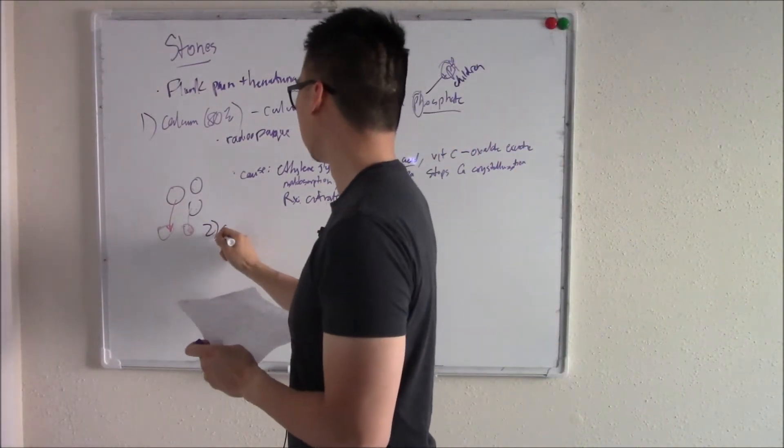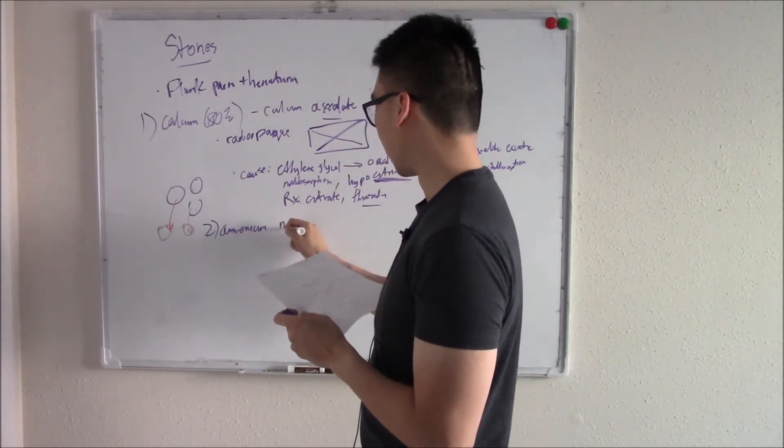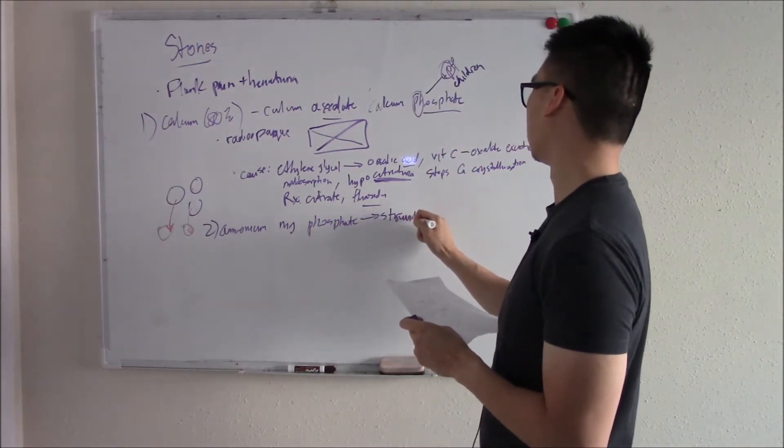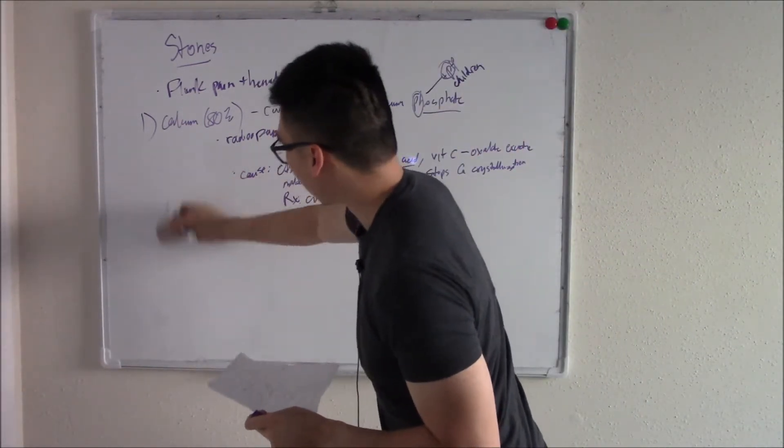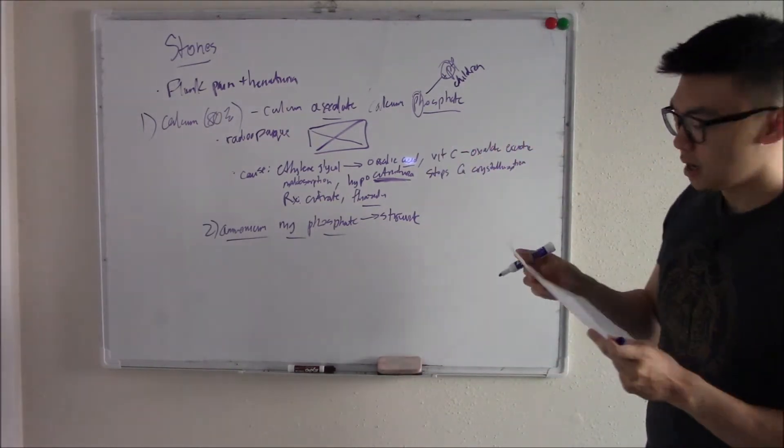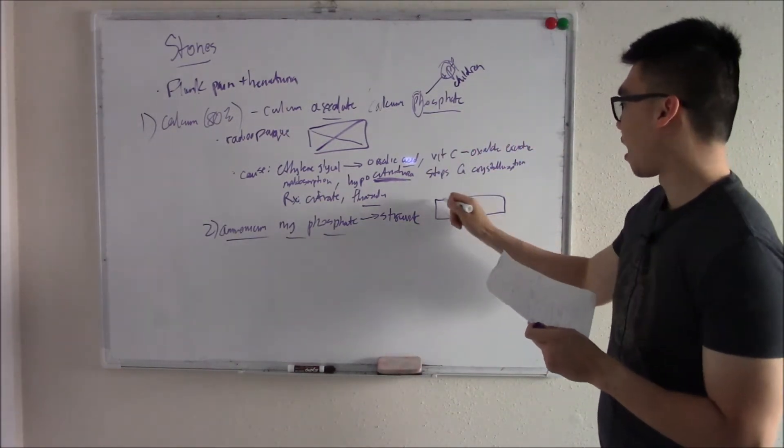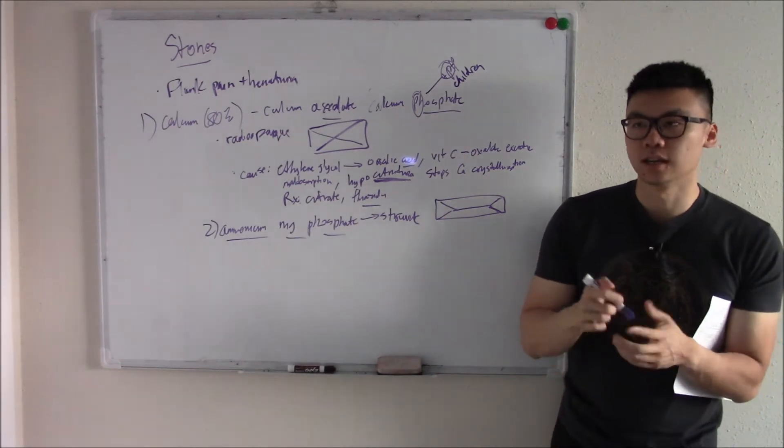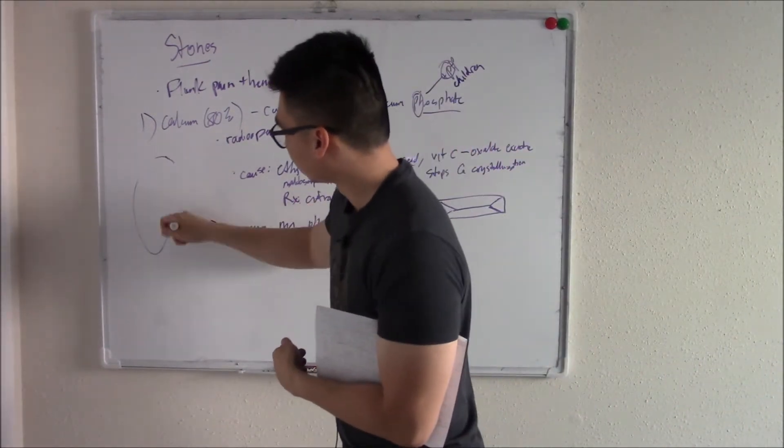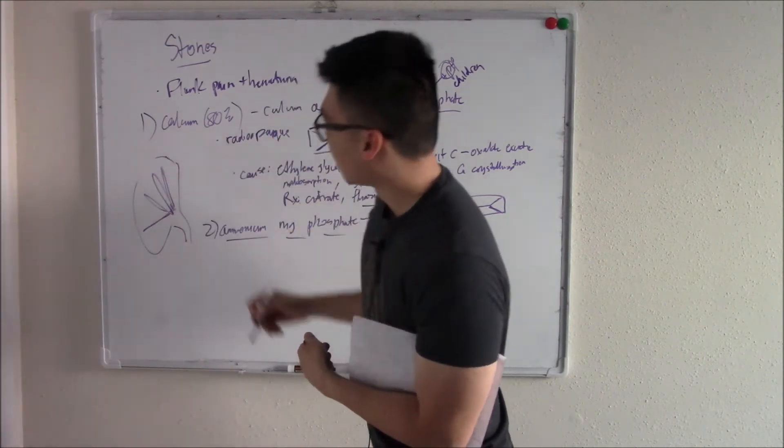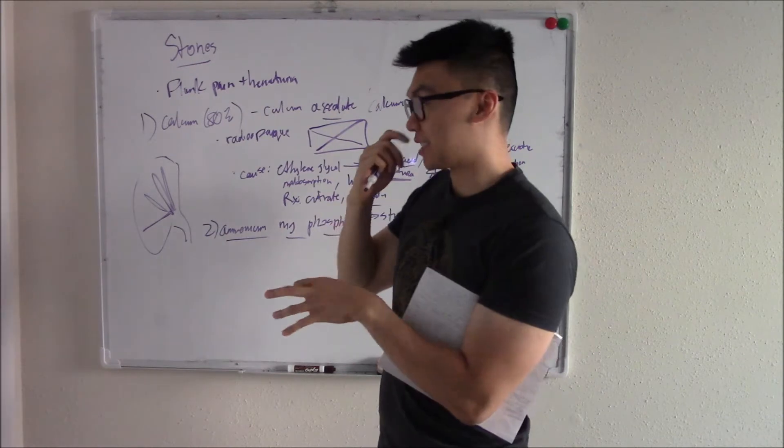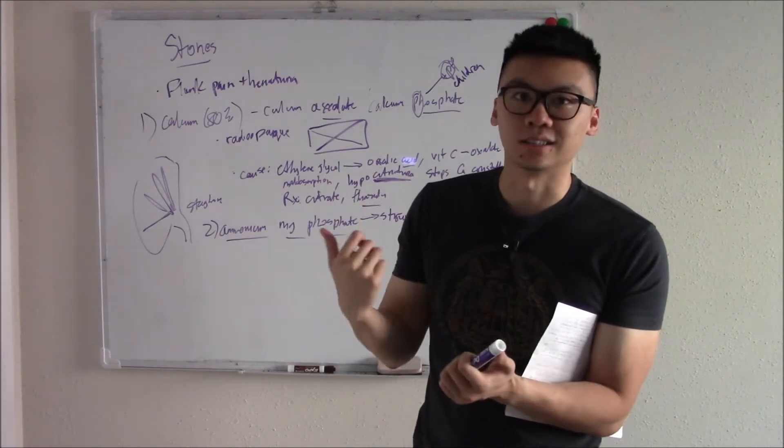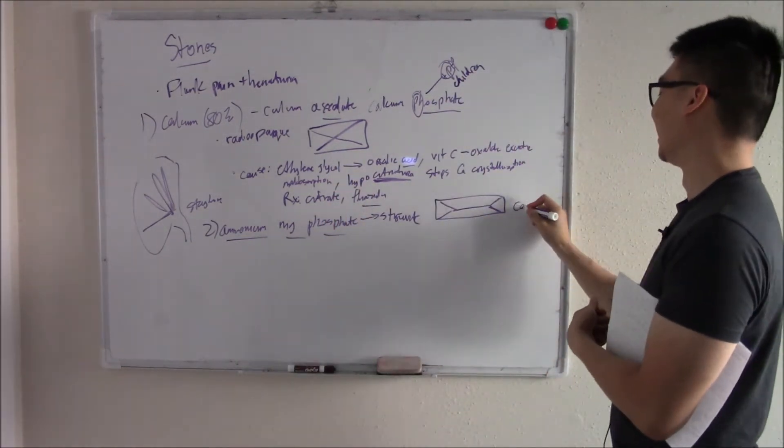The second type of stone is ammonium magnesium phosphate stone. Sometimes we just shorten it as struvite stones. Struvite stones look kind of like a coffin lid. And that is very fitting because these can form massive stones. They're so big that they take up your entire kidney. They kind of look like horns. We call these staghorn stones.